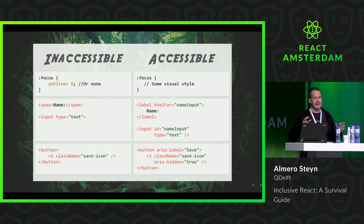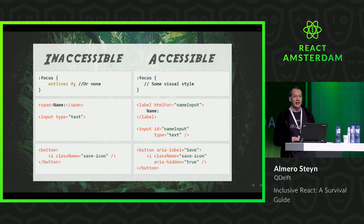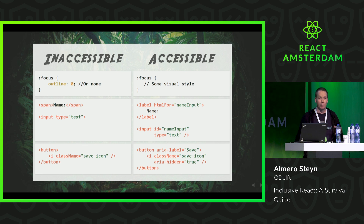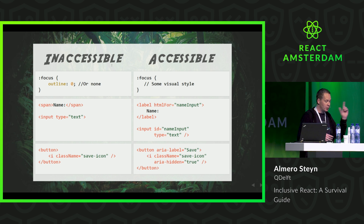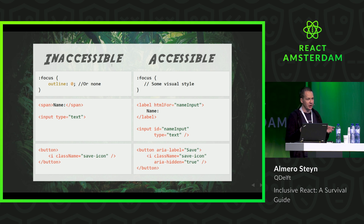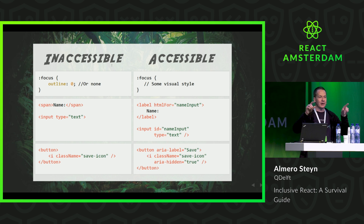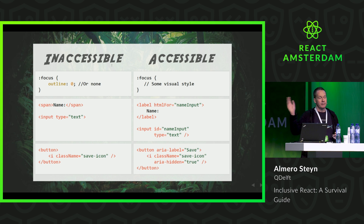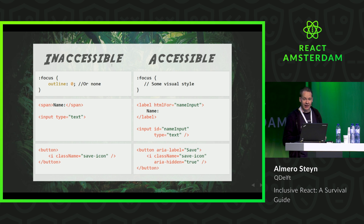Here are some examples of code. On the left, we've got the inaccessible blocking version; on the right, the accessible fixed version. First, setting focus outline to zero or none in your CSS — if you do this, keyboard users can no longer interact with your website because you remove the outline showing them which element is currently focused. To fix it, either don't do it or implement another clear visual style.